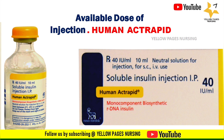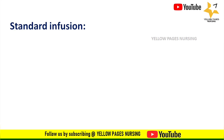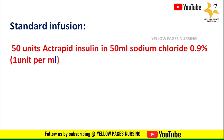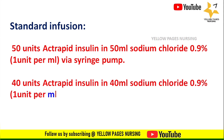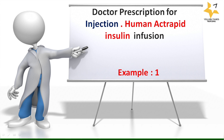For a standard infusion, 50 units of actrapid insulin is diluted in 50 ml sodium chloride 0.9%, giving 1 unit per ml, administered via syringe pump. In some institutions, 40 units of actrapid insulin is mixed in 40 ml sodium chloride 0.9%, also giving 1 unit per ml via syringe pump.